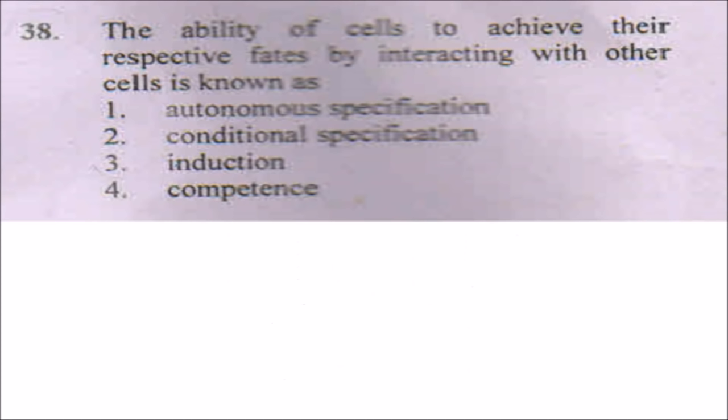The next question is: the ability of cells to achieve their respective fates by interacting with other cells is known as what? The first option is autonomous — the name itself says 'auto,' meaning self; it will self-determine its fate and what it has to specialize into. But in conditional specification, the cell decides its fate with nearby cells or from external sources, especially by interacting with neighboring cells. So the answer will be conditional specification.